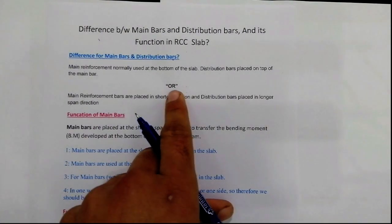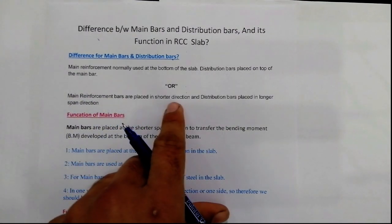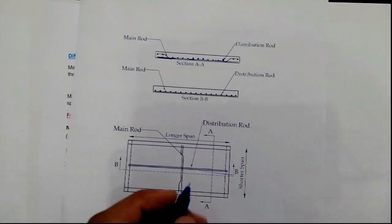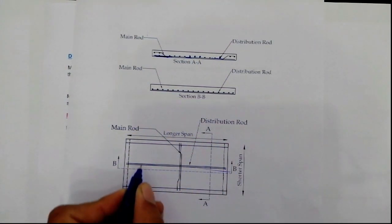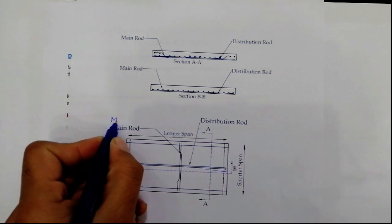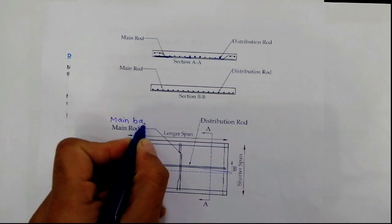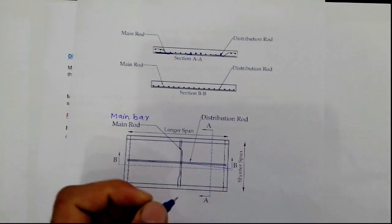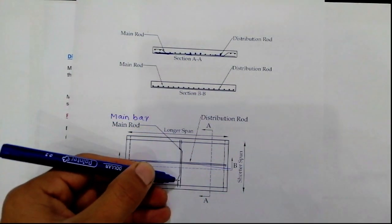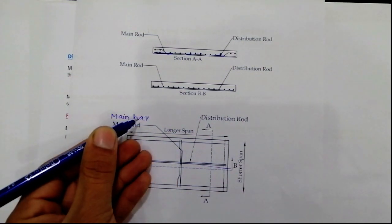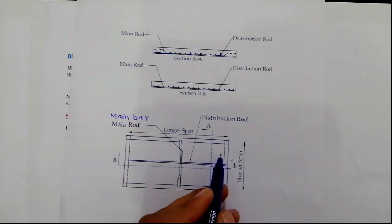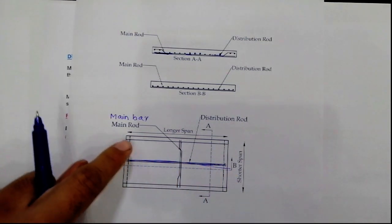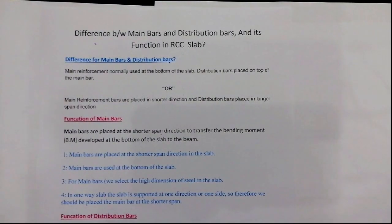You can also define it this way: main reinforcement bars are placed in the shorter span direction and distribution bars are placed in the longer span direction in RCC slab. Look at this diagram — this is the short span and this is the longer span. Main bars, also called main rods, are placed at the shorter span. Distribution bars, also called distribution rods, are placed at the longer span.